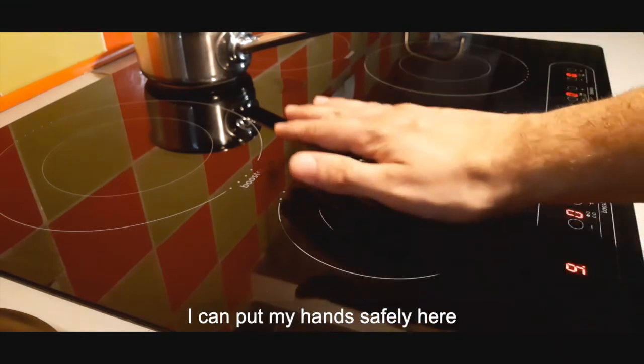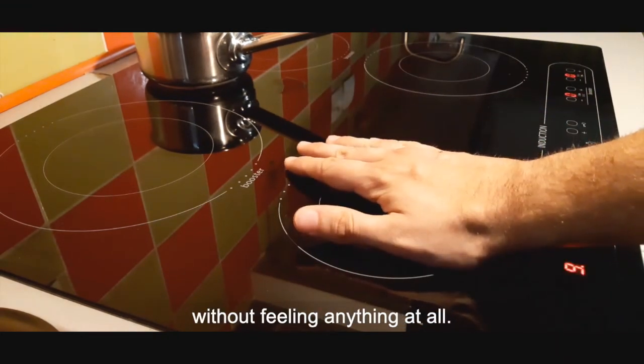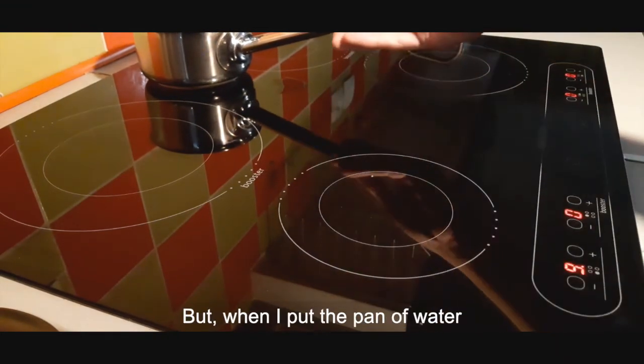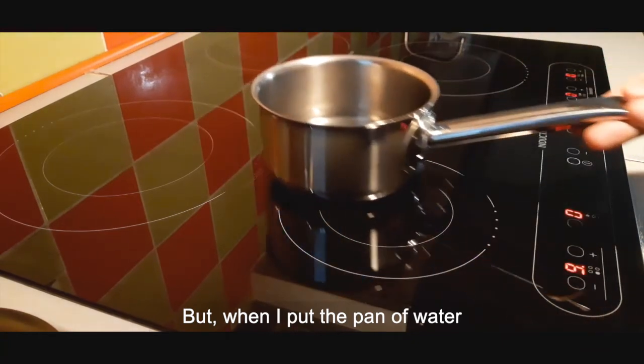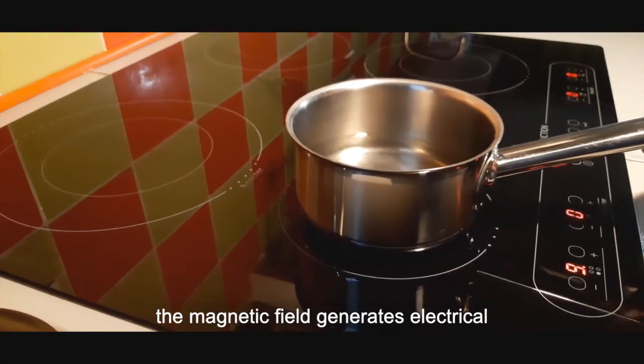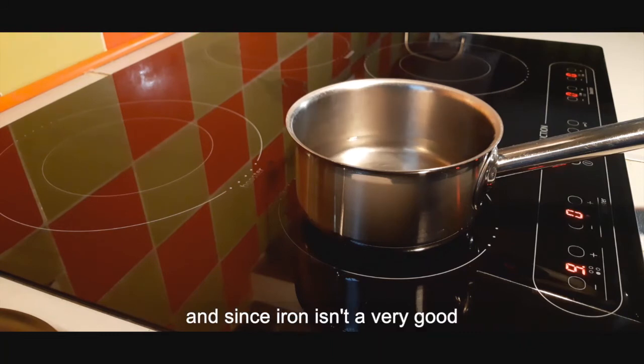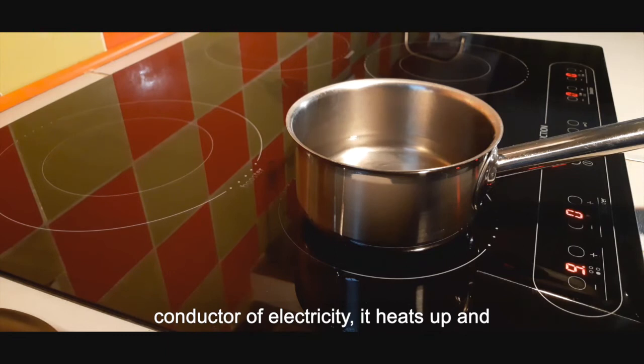Now at this point there's no heat being generated. I can put my hands safely here without feeling anything at all. But when I put the pan of water above that coil, the magnetic field generates electrical fields in the iron in the bottom of the pan. And since iron isn't a very good conductor of electricity, it heats up and this is where the heat comes from that then cooks your food.